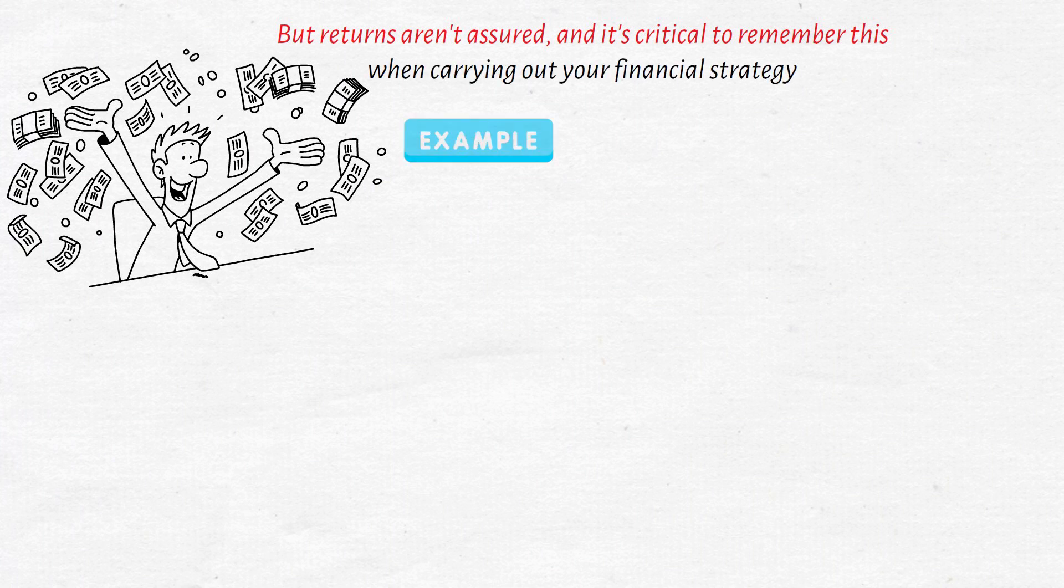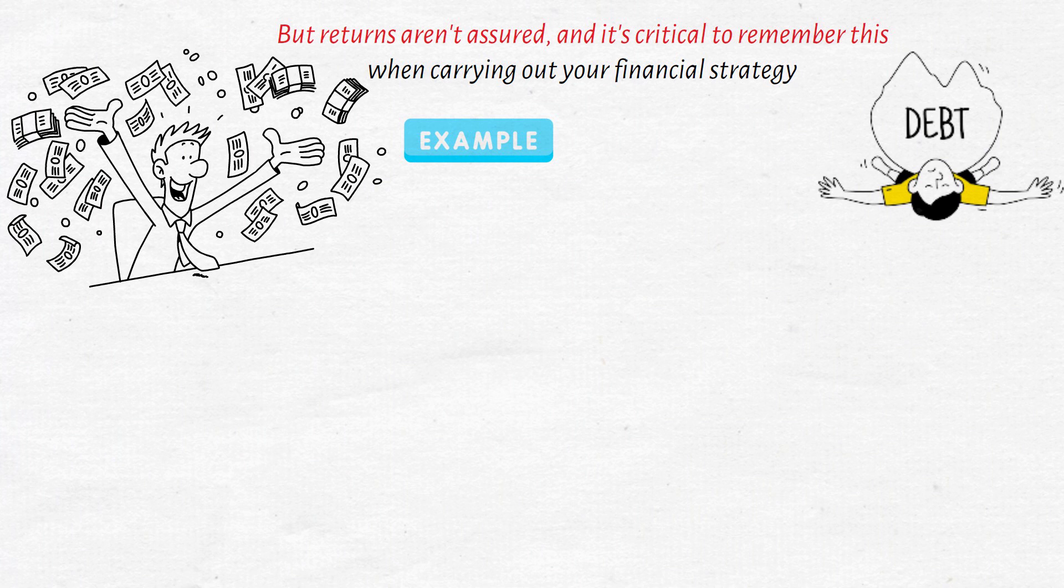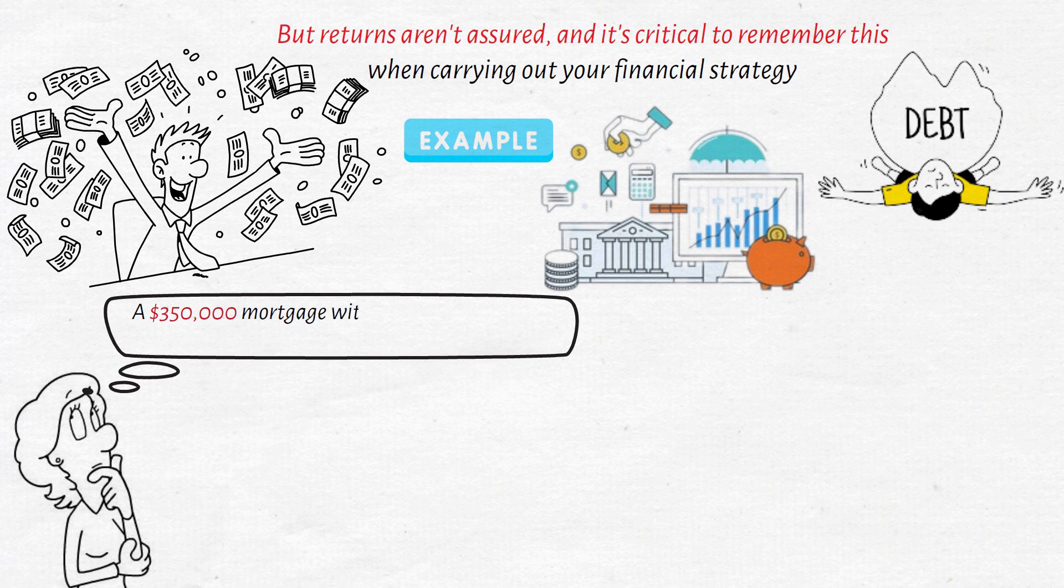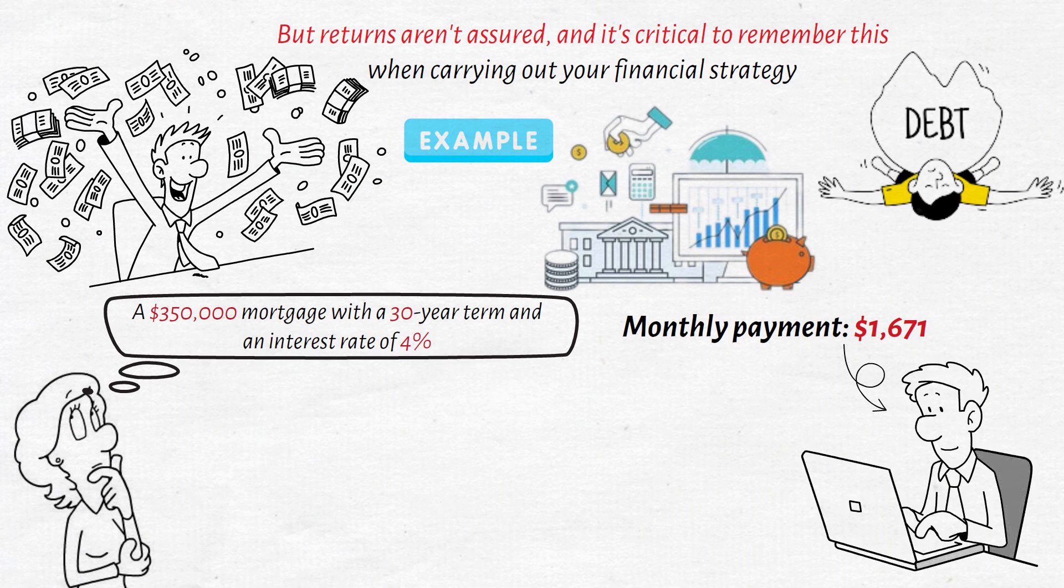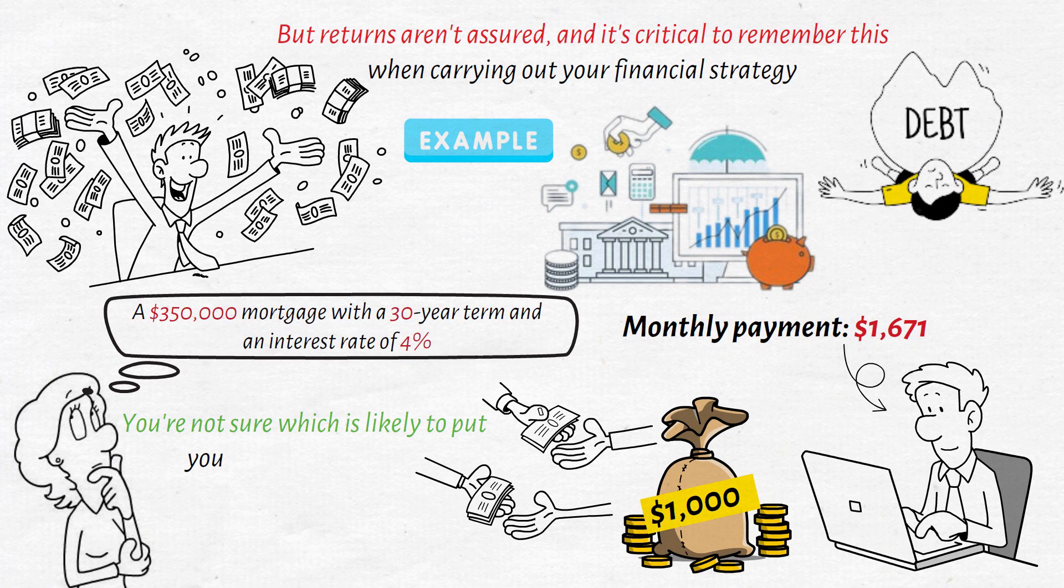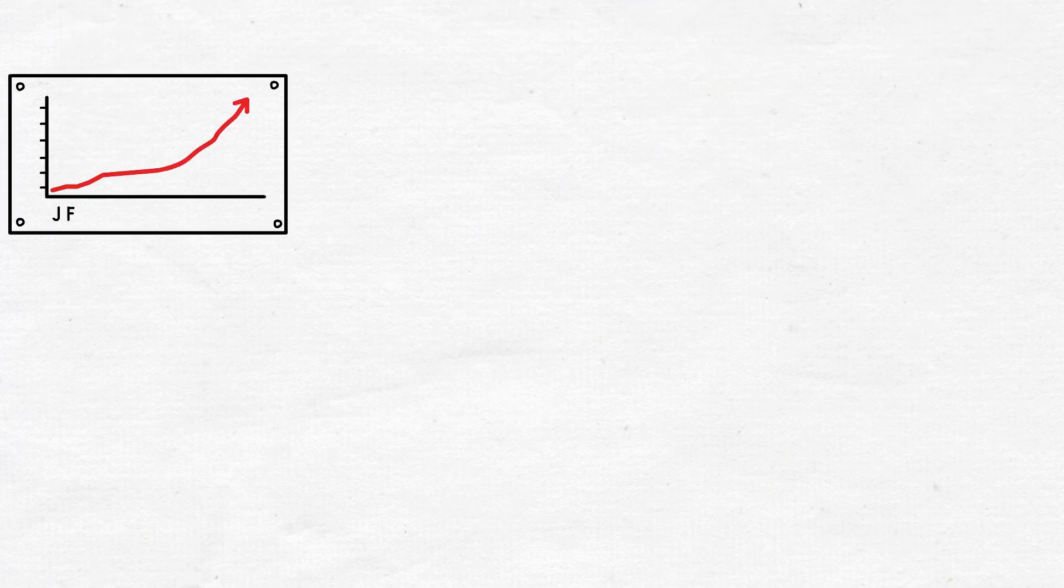Consider the basic real-world example of debt repayment versus stock market investment. Assume you had a $350,000 mortgage with a 30-year term and an interest rate of 4%, giving you a monthly payment of $1,671. You're making decent money at work and have an extra $1,000 in your budget that you're either going to use to pay down this mortgage or put towards investments, but you're not sure which is likely to put you in a better position.